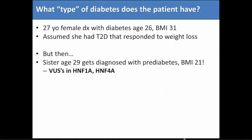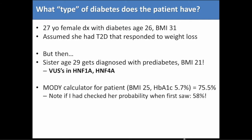What do we do with a variant of uncertain significance? One thing that can be really helpful is to look at other family members. This patient was really motivated and wanted to get MODY testing. At first I was hesitant — she really seemed like type 2 diabetes — but I calculated her MODY probability and at the point when she had lost all the weight and still had a hemoglobin A1C in the pre-diabetes range, she actually had a really high probability. If I had checked her probability when I first saw her, it would have been 58%. And she came back positive — the same variant in HNF4-alpha — and a different lab called it likely pathogenic.